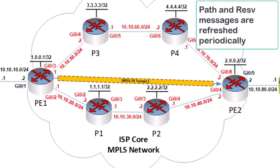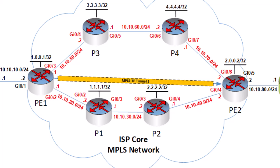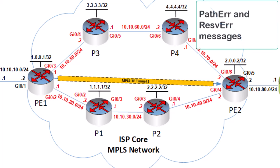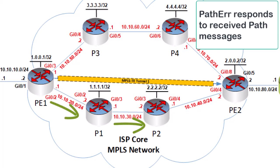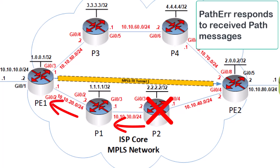These path and reservation messages are refreshed periodically as part of RSVP's operation to maintain the session and reservations. Beyond the path and reservation messages, we also have a few more RSVP messages that participate in this operation. We have the path error and the reservation error messages. As their names suggest, these are used to deal with errors that may be encountered in the exchange of path and reservation messages. The path error message is sent by a router in response to a received path message that it cannot process or comprehend.